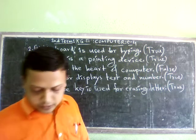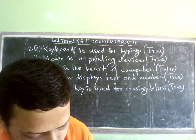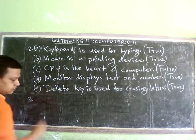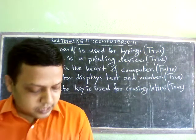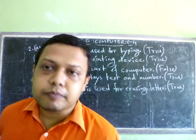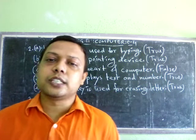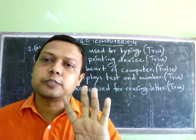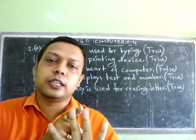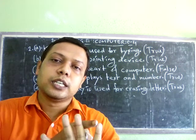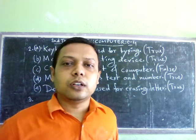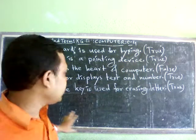Now we are getting to question number 3: Mention any 4 parts of a computer system. We all know that a computer has 4 main parts. Number 1 is monitor, number 2 is keyboard, number 3 is mouse, and number 4 is CPU. So we will note down all these names in this answer.